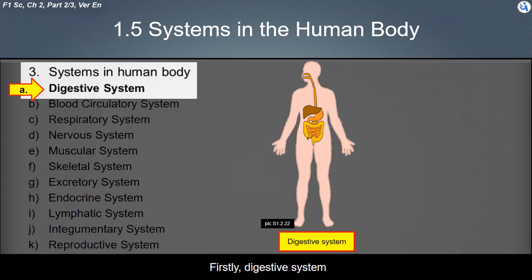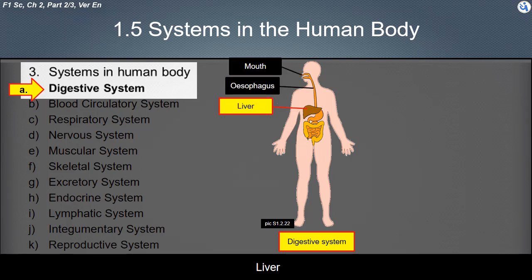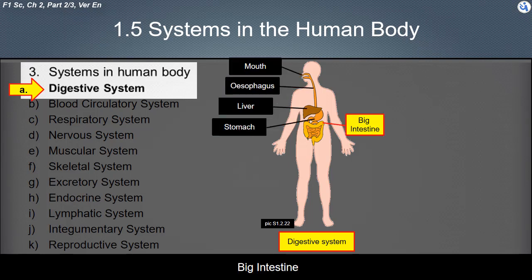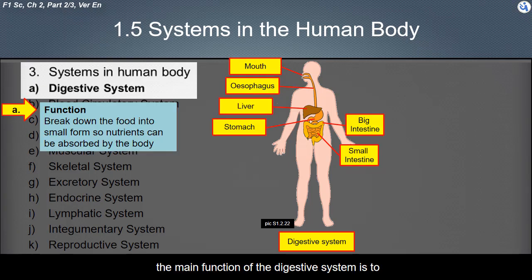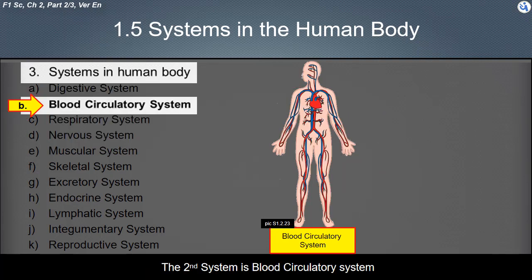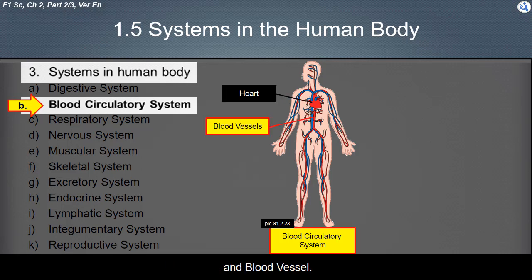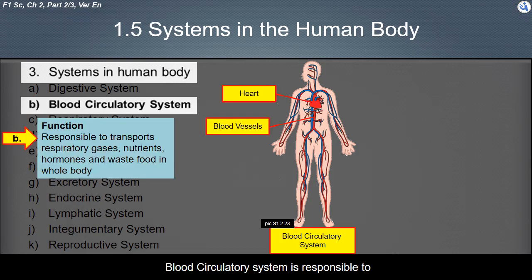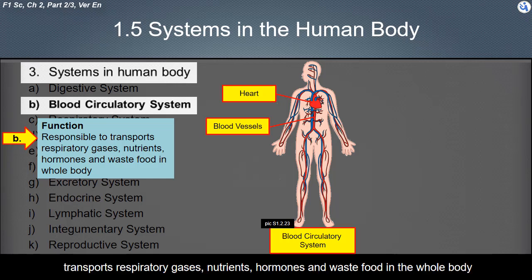Firstly, the digestive system. The digestive system consists of a mouth, esophagus, liver, stomach, big intestine, and small intestine. The main function of the digestive system is to break down the food into small form so nutrients can be absorbed by the body. The second system is the blood circulatory system, which consists of the heart and blood vessels. It is responsible for transporting respiratory gases, nutrients, hormones, and waste throughout the body.